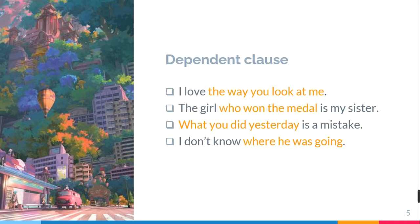The clauses shown in orange are dependent clauses. 'The way you look at me' is another clause which is dependent, meaning it cannot stand alone — it should be together with another clause to make it complete. So we cannot say 'the way you look at me' as a sentence on its own; it doesn't make sense as a sentence.